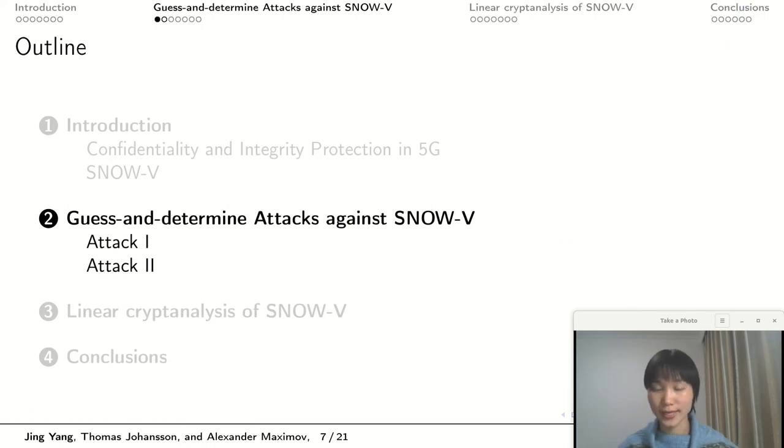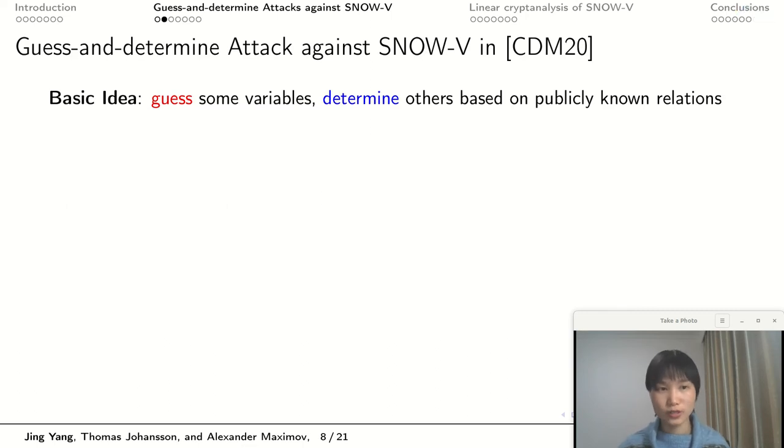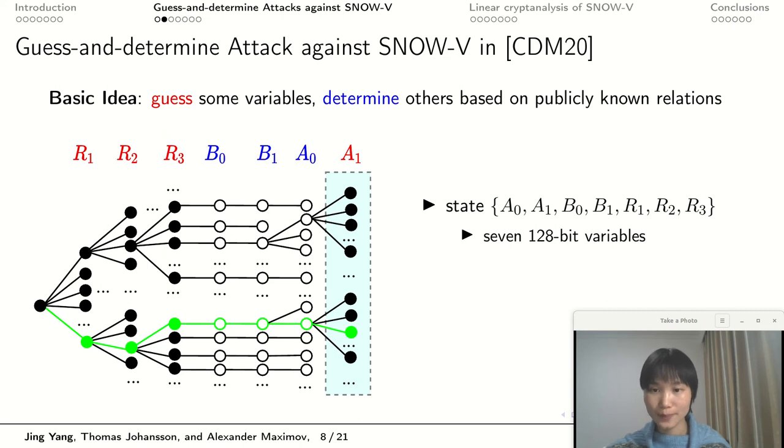I will present more details of the two guess-and-determine attacks. The basic idea of a guess-and-determine attack is to guess some variables, determine others based on some publicly-known relations. In an external evaluation report of SNOW-V, the authors proposed a guess-and-determine attack. We regard the internal state of SNOW-V as seven 128-bit variables. First, guess three variables R1, R2, and R3. Based on the guessed values, they can determine the values of B0, B1, and A0. In the end, they need to guess the final variable A1. The guess-and-determine process can be illustrated as a tree, and each branch is a guess-and-determine path. Since the guessing phase involves four variables, the complexity is 2 to the power of 512.